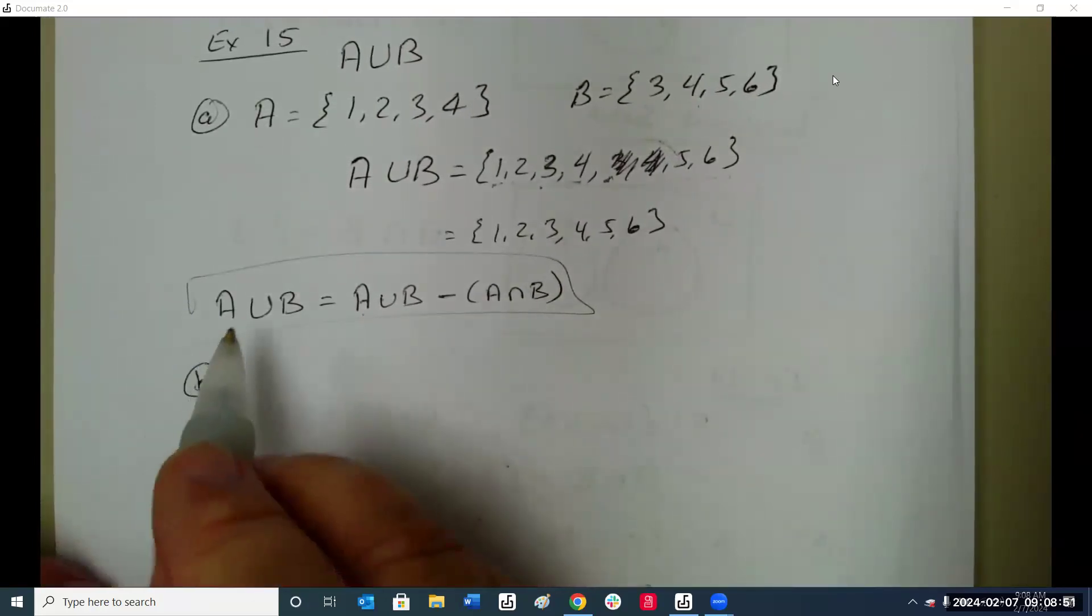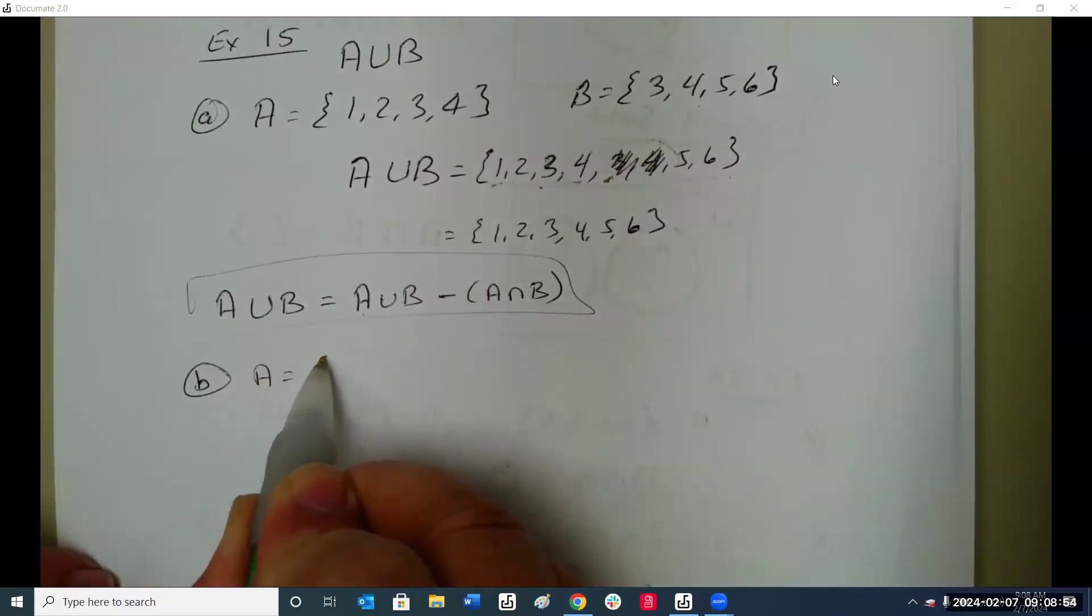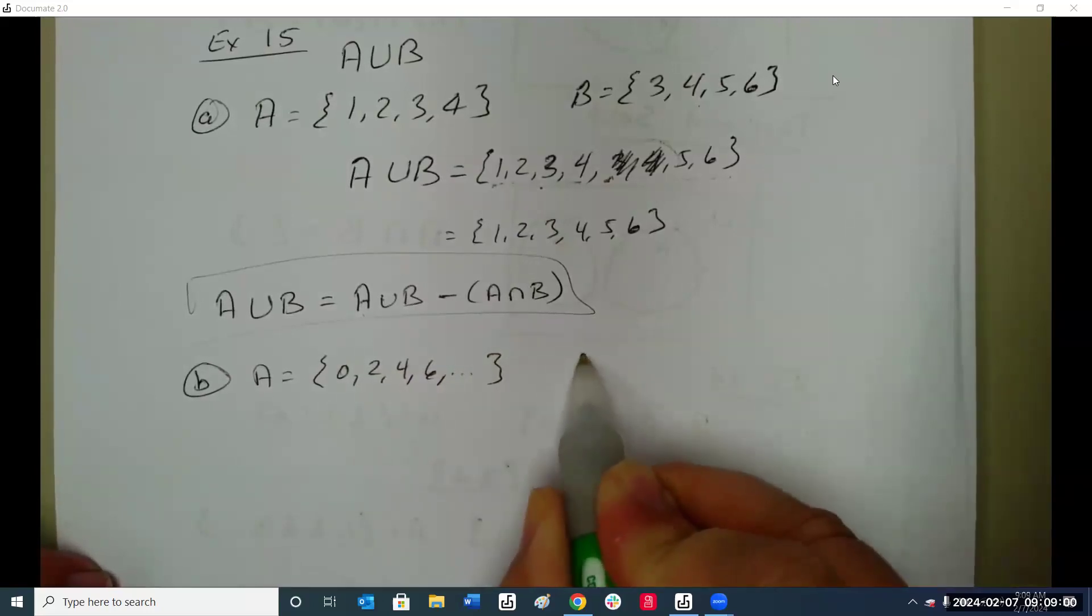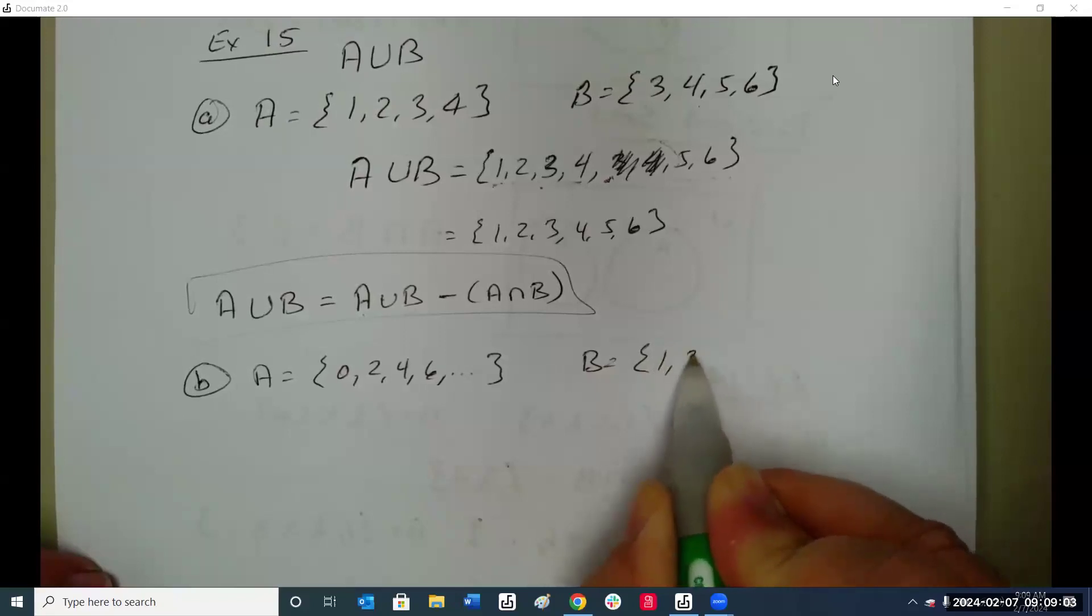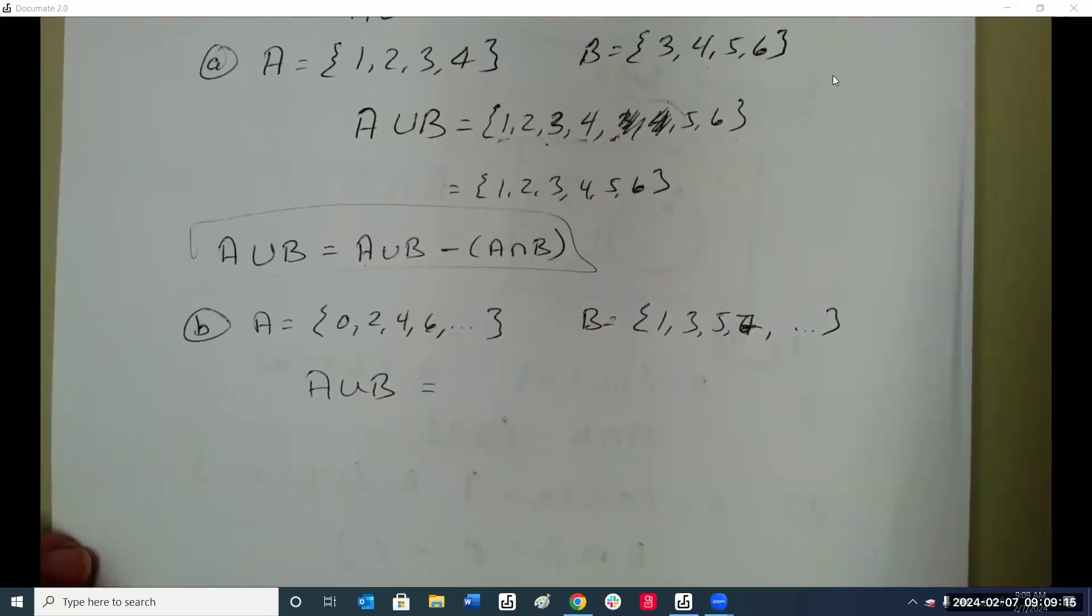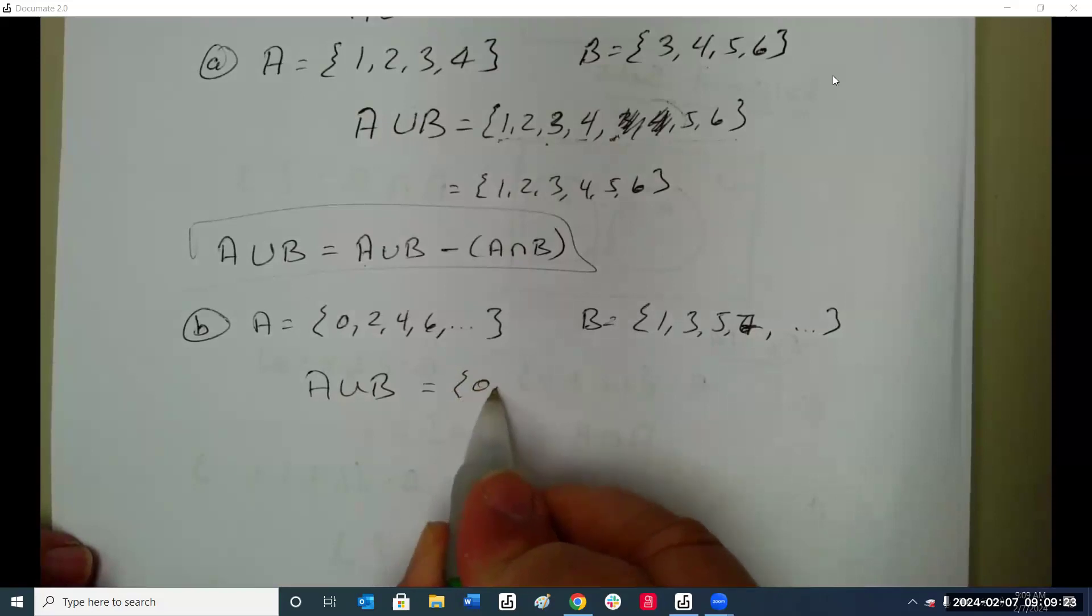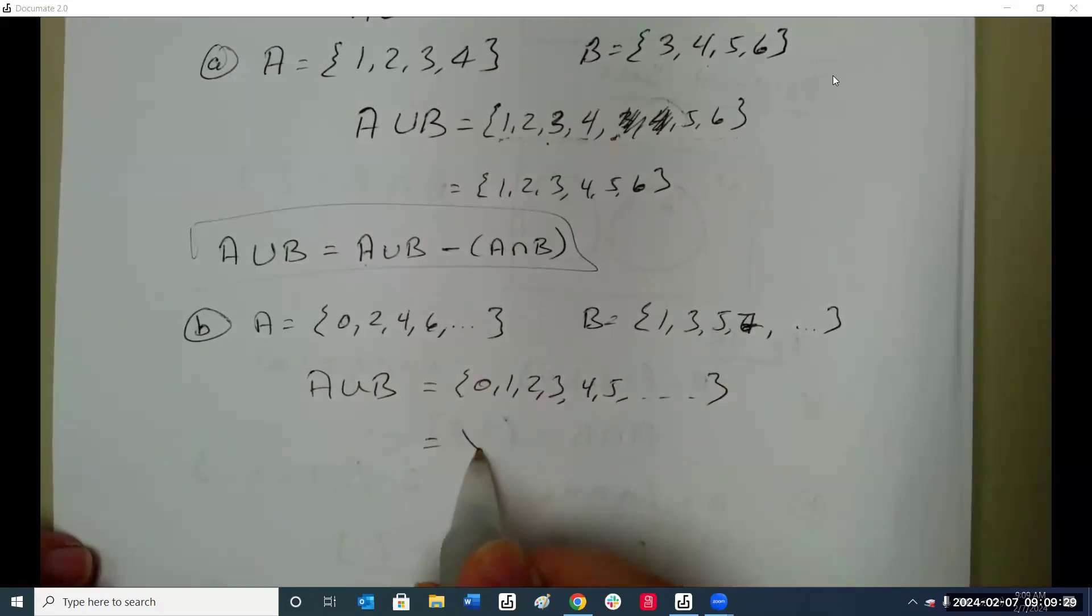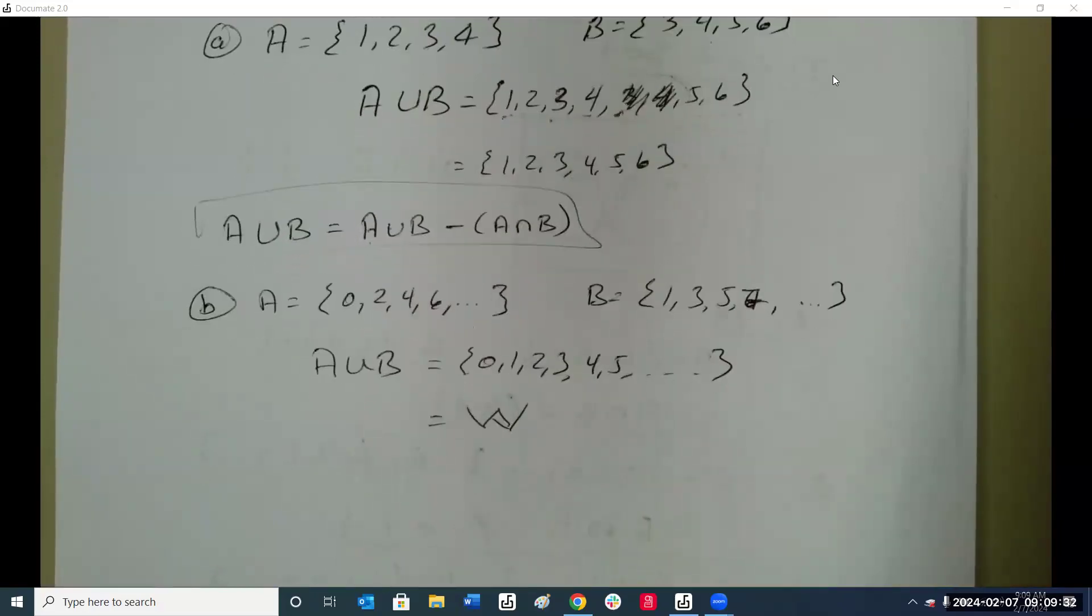B: A is 0, 2, 4, 6, all the even numbers. B is all the odd numbers. So A union B is what? 0, 1, 2, 3, 4, 5, which becomes all the whole numbers.